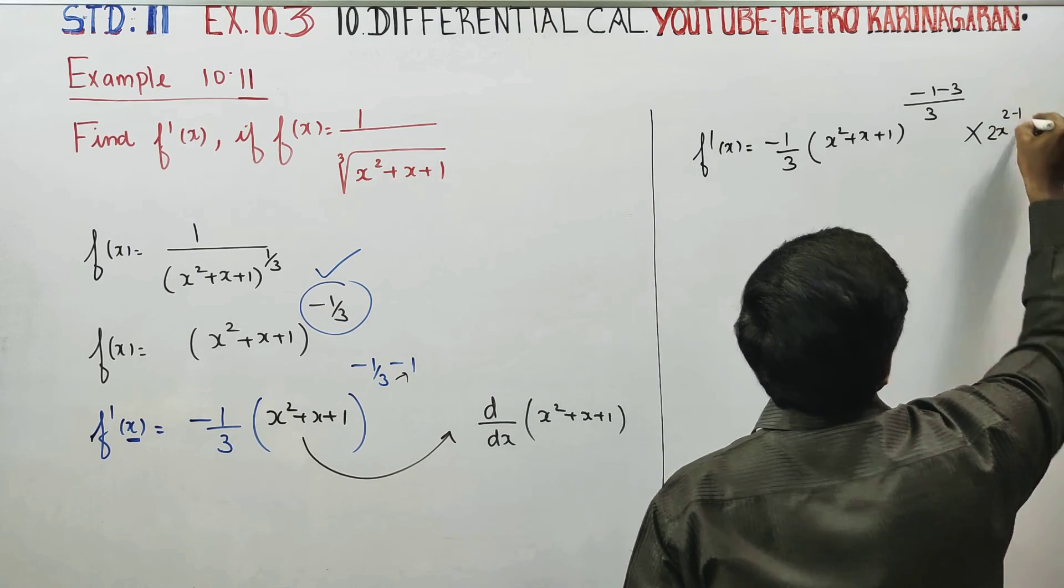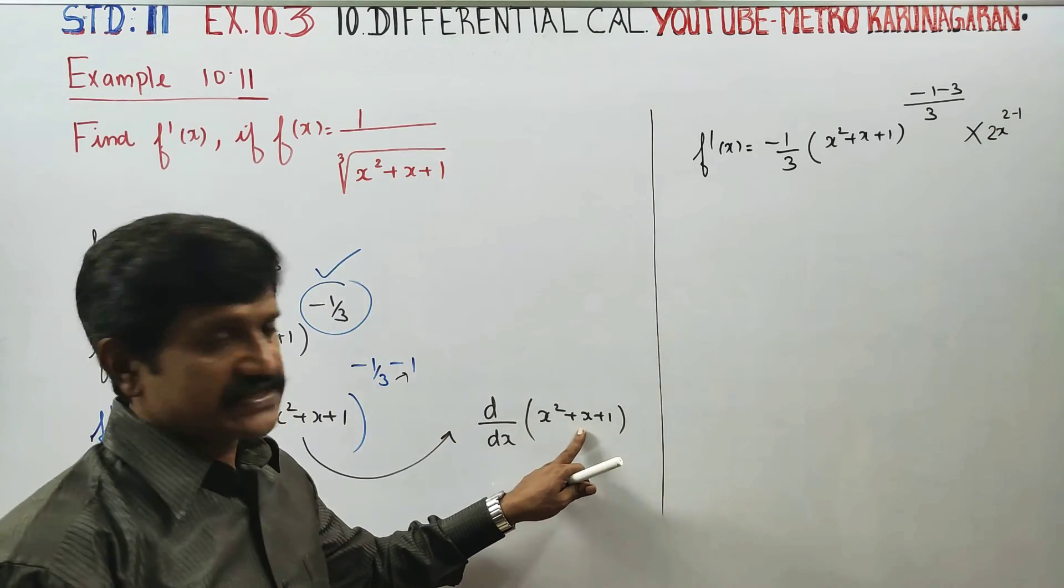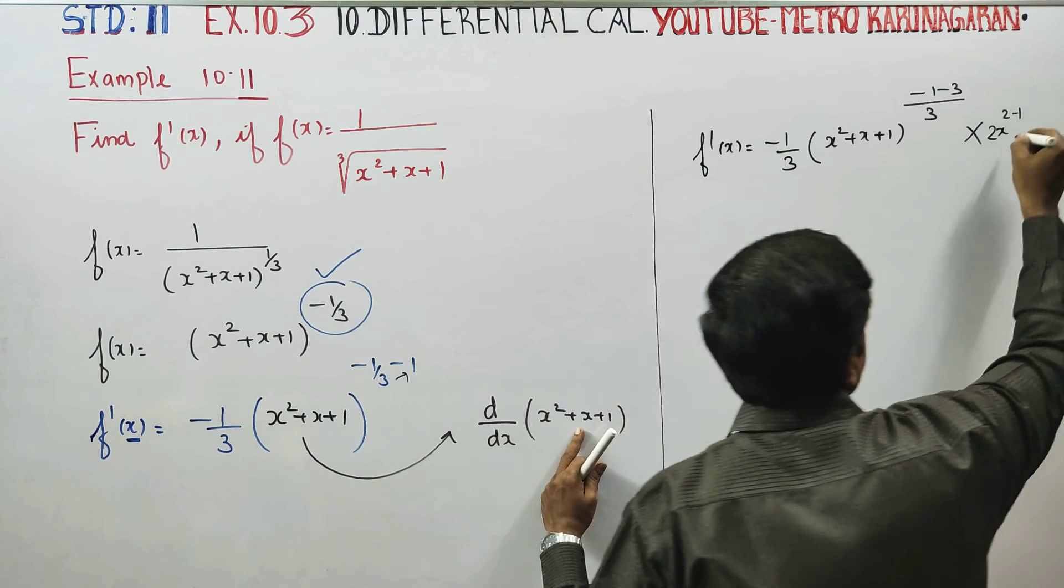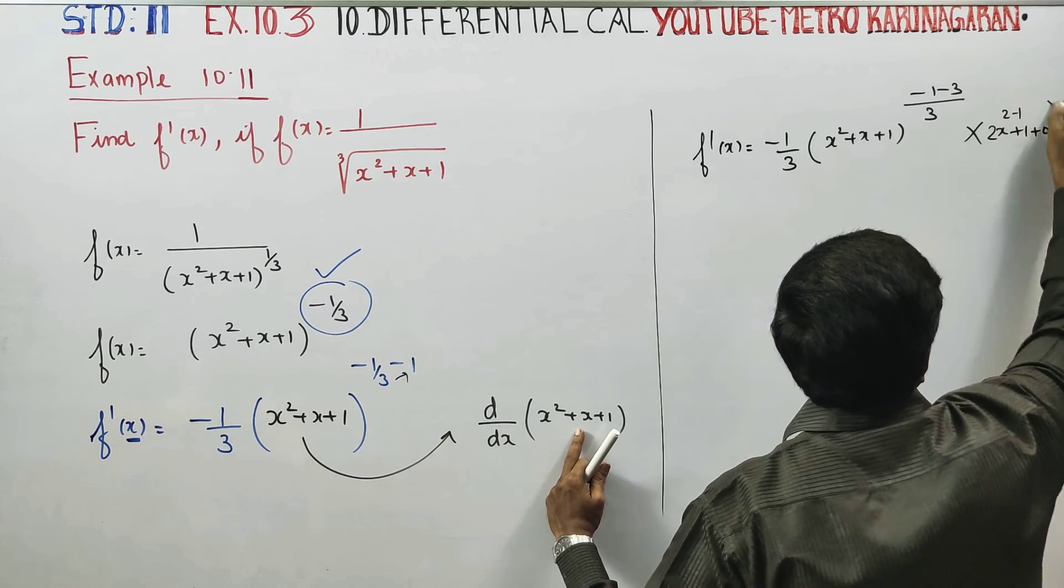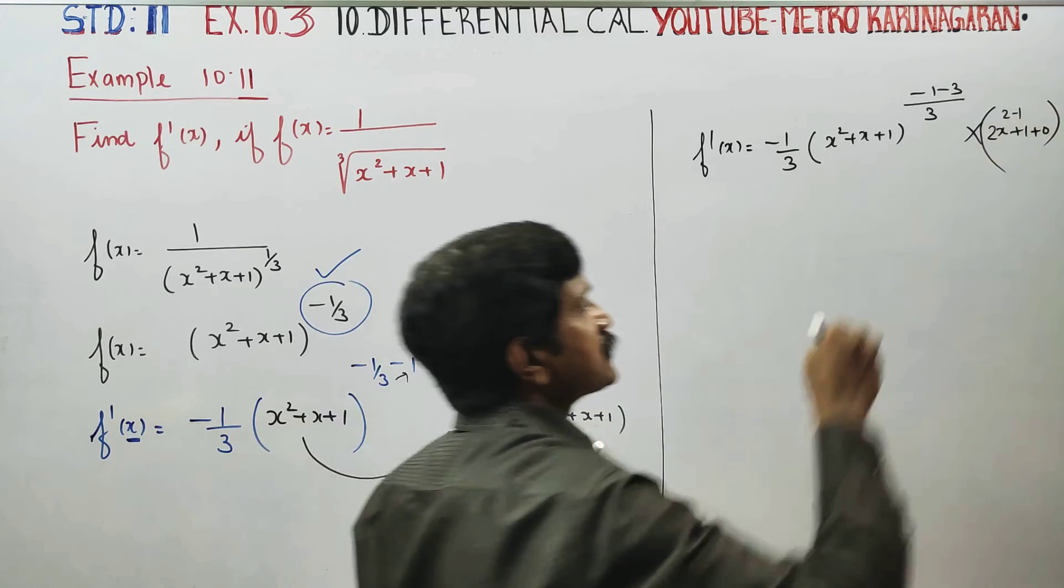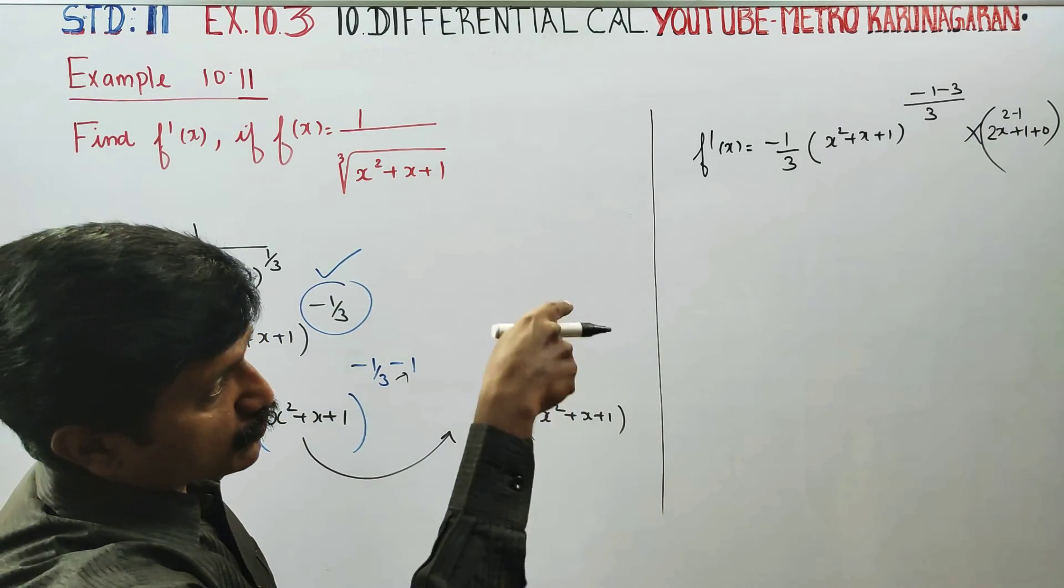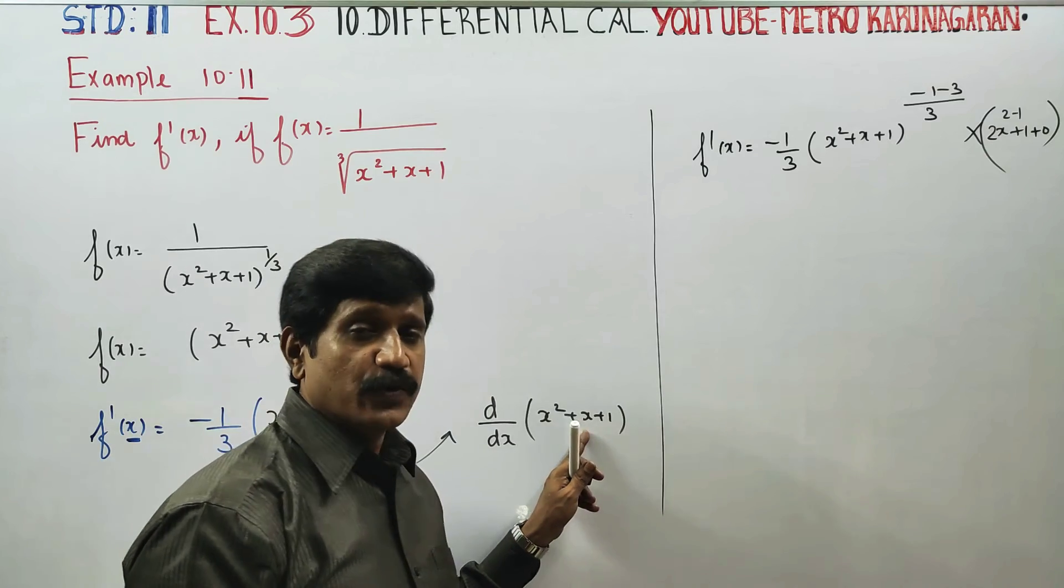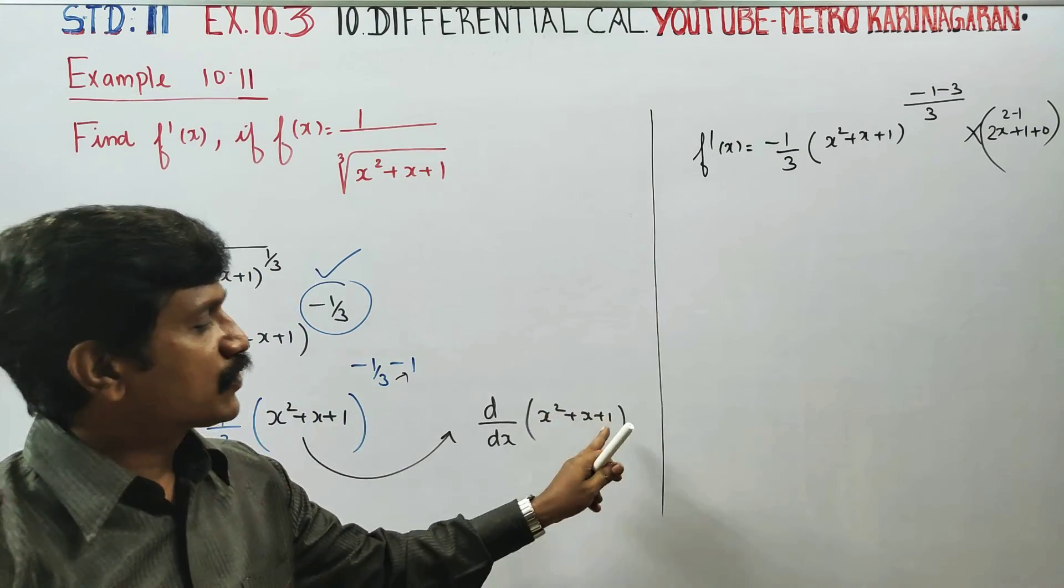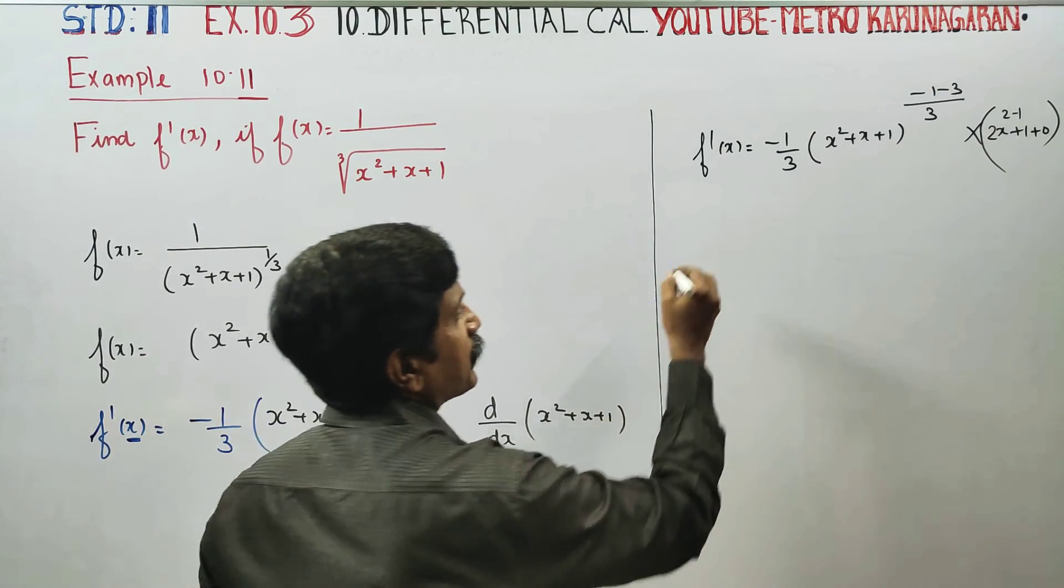2x plus 1, x differentiate 1, constant differentiate 0. So minus 1, 2x plus 1. Minus 1 by 3.